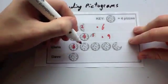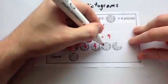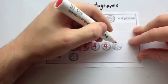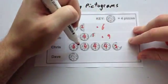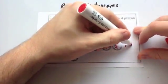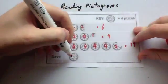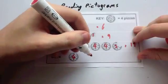Chris has eaten four, eight, twelve, sixteen. And then he's eaten three quarters of a pizza, so that's one, two, three. So that means that he's eaten sixteen, nineteen pizzas. And Dave has got one symbol, so he's got four pizzas that he's eaten.